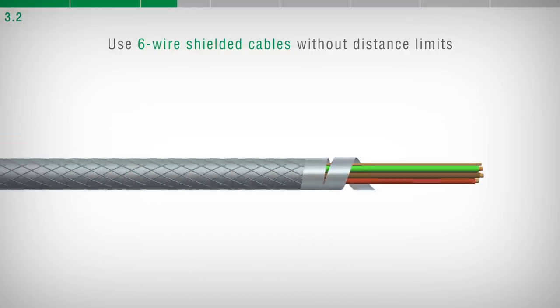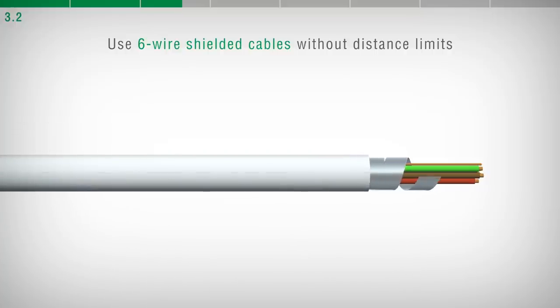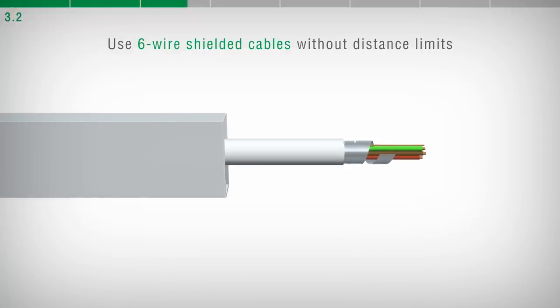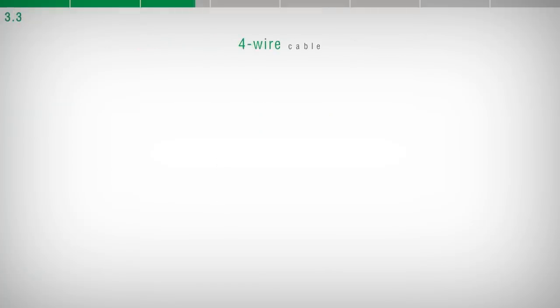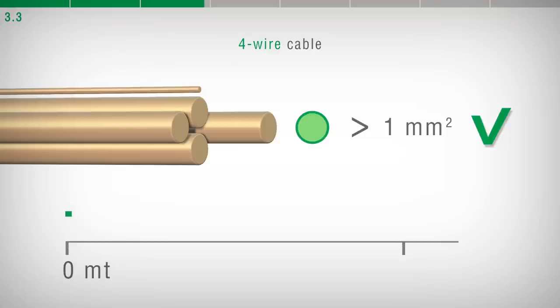Ideally, it must be inserted alone into the wire way and laid as far as possible from the power cables. When using four conductor connection cables, consider a minimum section of one square millimeter and preferably not exceed 300 meters in length.